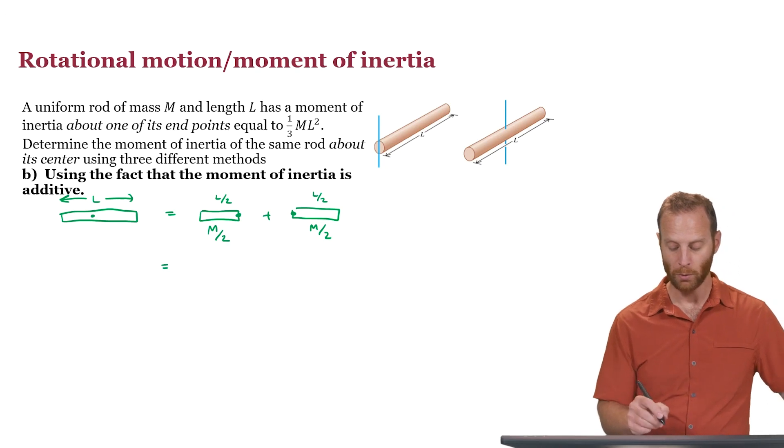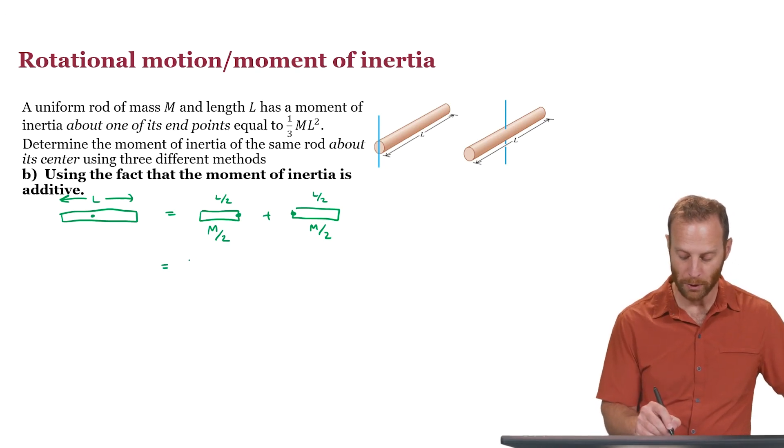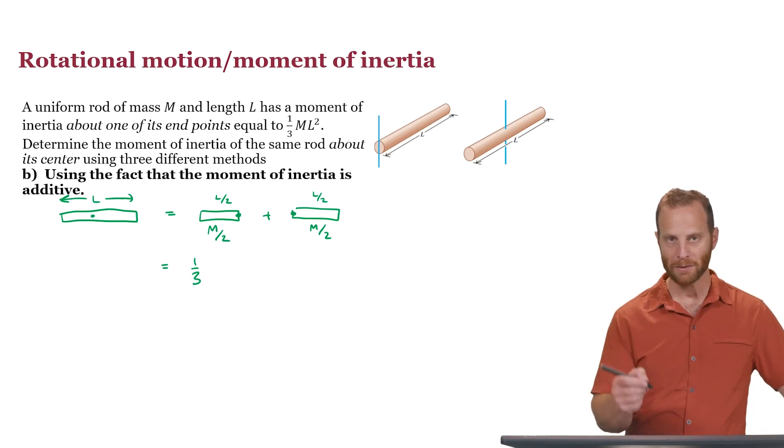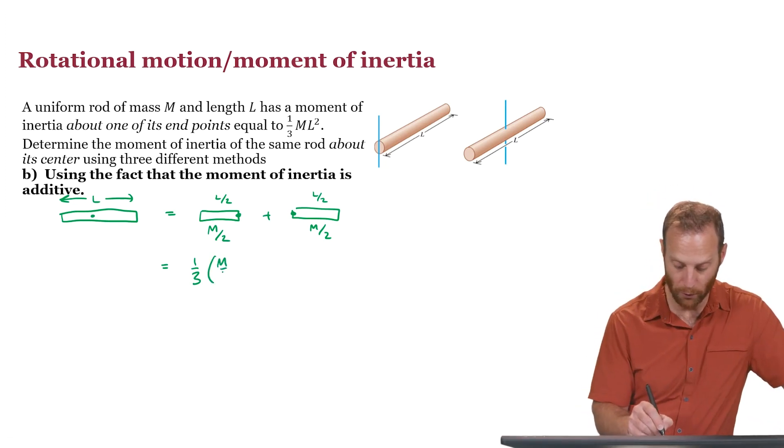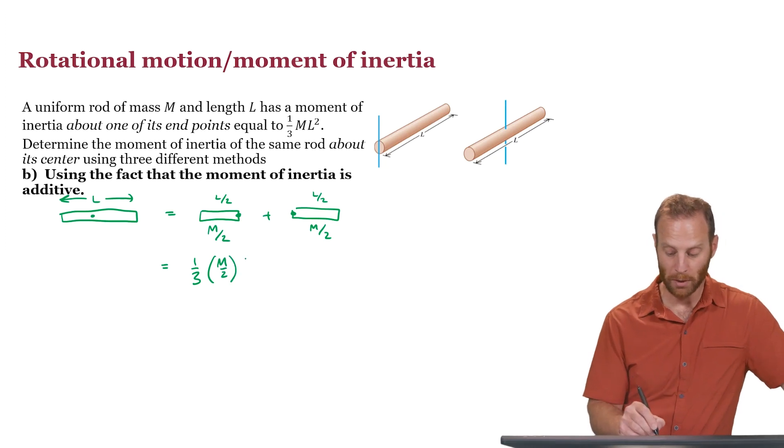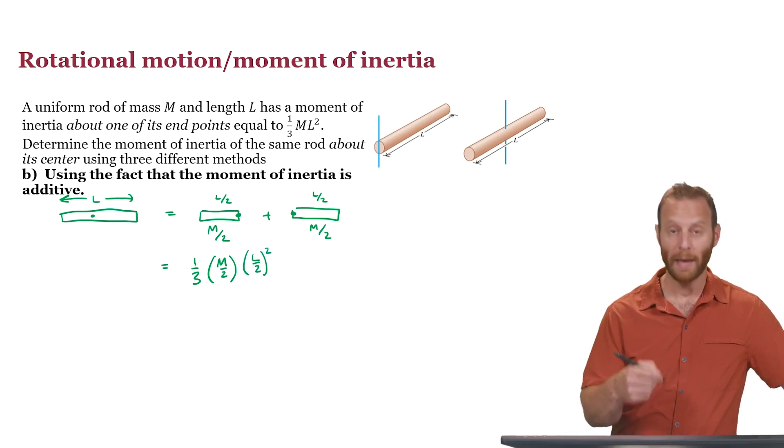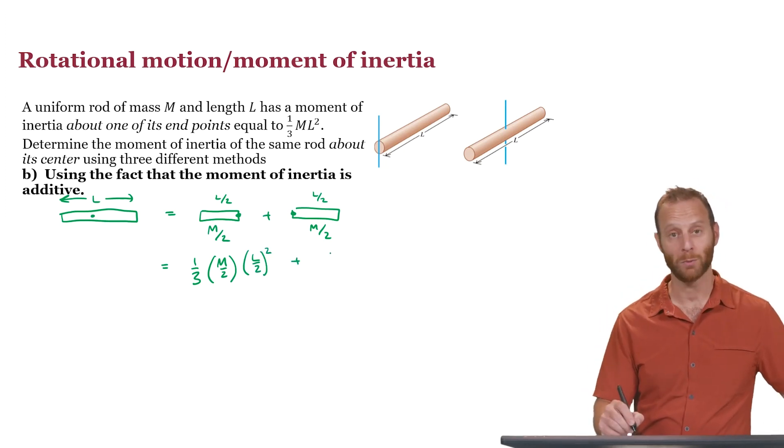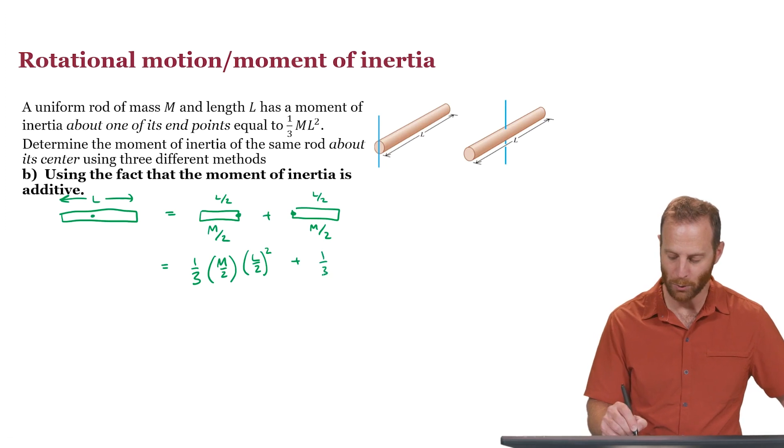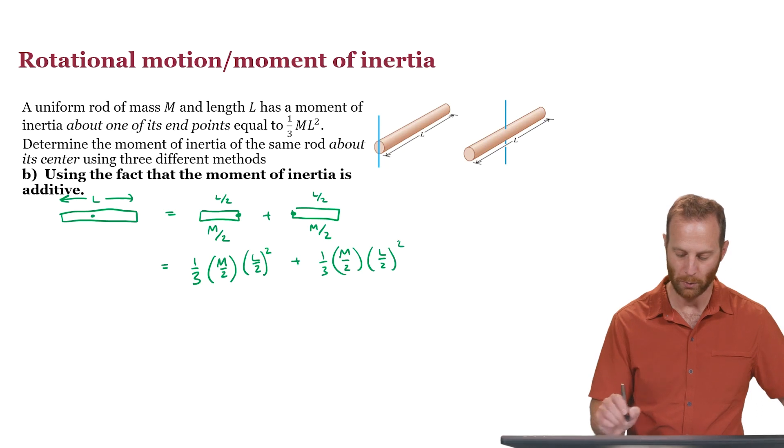So what are we going to do? We're going to write this as the moment of inertia for a rod, one-third, the mass of that rod, well now the mass that we're interested in is m over 2, and then we multiply that by the length of the rod squared, well the length of this half rod is l over 2 squared, and we'll add that to the same amount because we've just broken this up into two equal rods, m over 2, l over 2 quantity squared.